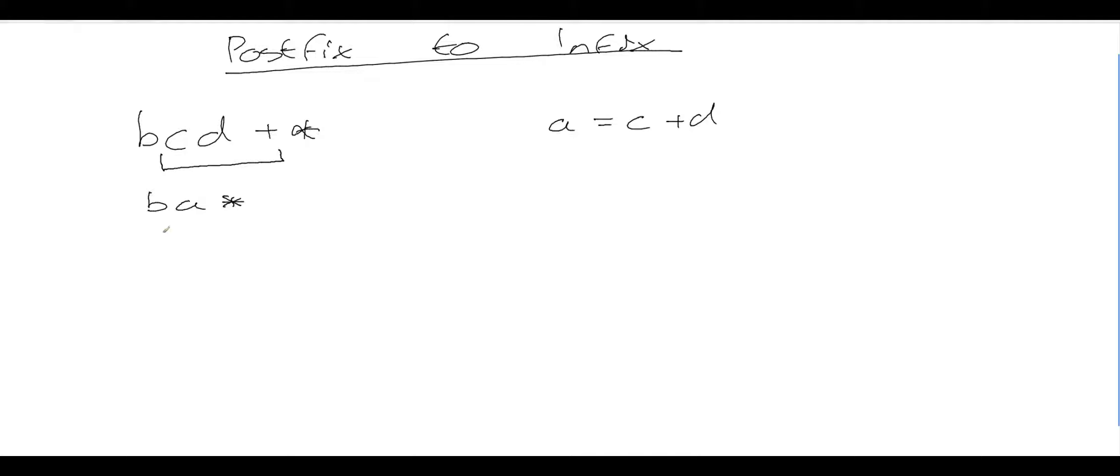And then all I have to do is look at this and say two operands and an operator left. So my resulting infix expression is b star a. And because I've done that little aside saying a equals c plus d, I can substitute c plus d for a. So I can say b star c plus d is my infix expression.